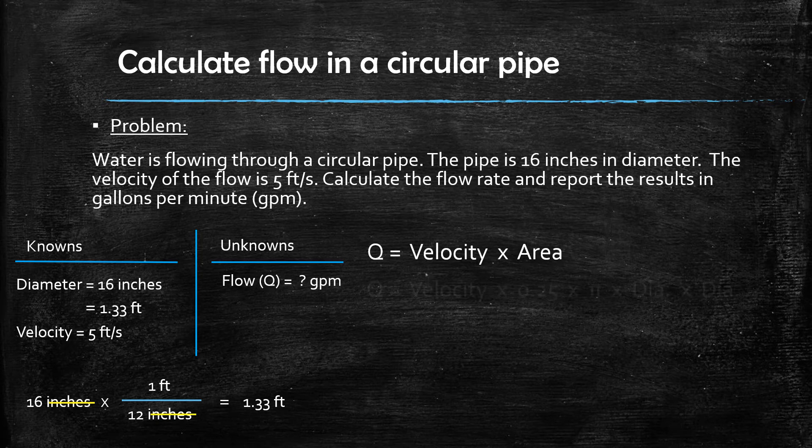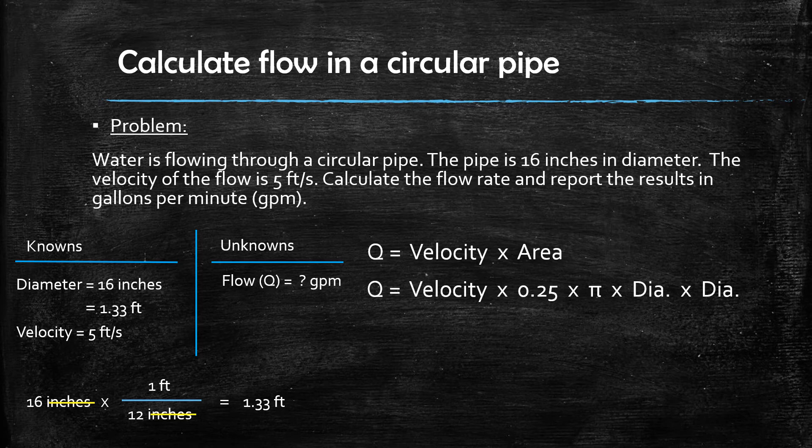The resulting calculation is the velocity multiplied by 0.25 multiplied by pi or 3.14 multiplied by the diameter of the pipe and multiplied by the diameter of the pipe one more time.